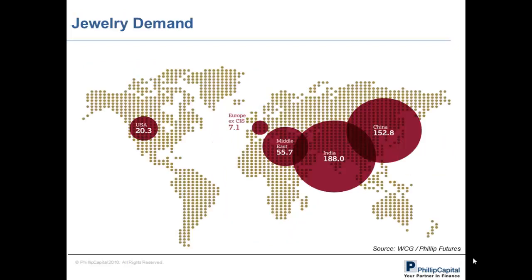The bulk of gold demand comes from jewelry demand. Based on the recent World Gold Council report, India is the biggest consumer in terms of jewelry demand with an annual amount of 188 tons of gold consumed in a year, followed by China with 152.8 tons in 2012. The recent depreciation of the Indian rupee caused import restrictions on gold, yet despite the mounting currency pressure, India still retains its status as the largest consumer in terms of gold jewelry demand.